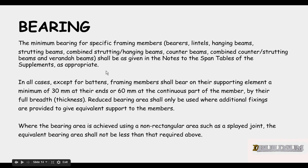The bearing of materials, the minimum bearing for specific framing members: bearers, lintels, hanging beams, strutting beams, combined strutting/hanging beams, counter beams, combined counter/strutting beams and verandah beams, shall be given in the notes to the span tables. In all cases, except for battens, framing members shall bear on their supporting element a minimum of 30mm at their ends or 60mm in the continuous parts of a member, by their full breadth or thickness. Reduced bearing area shall only be used where additional fixings are provided to give equivalent support to the members. Where the bearing area is achieved using a non-rectangular area such as a splayed joint, the equivalent bearing area should not be less than that required above.